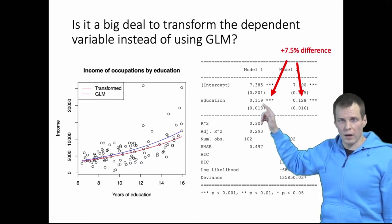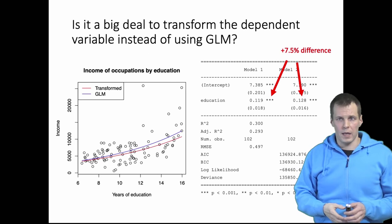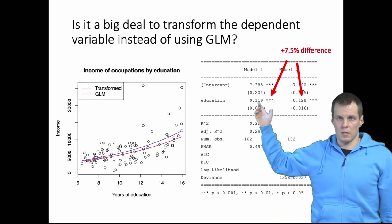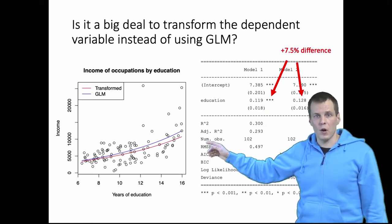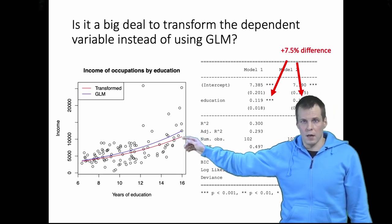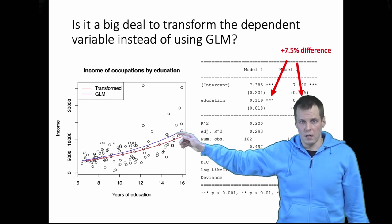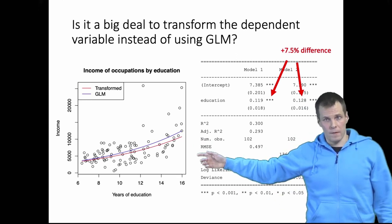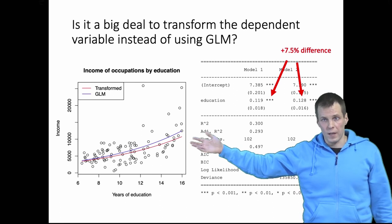So this is 0.119 this is 0.128. So 7.5 difference that is substantial. In many methodological papers we think that five percent bias is something that you can ignore. But this 7.5 percent difference is something that we should care about. Also when we look at the predictions here we can see that the transform dependent variable systematically under predicts how much professions that require high education actually make and this blue line here is a lot better fit to the data. So empirically it's not a huge difference but it's something that I think we should be concerned about because the fix is rather simple.